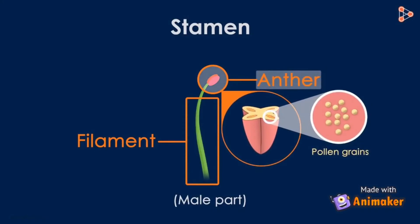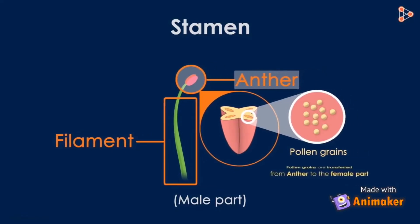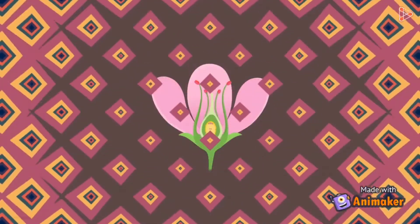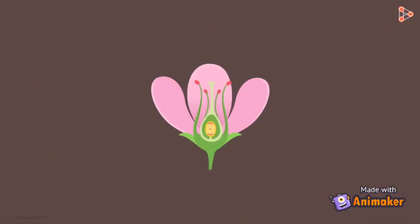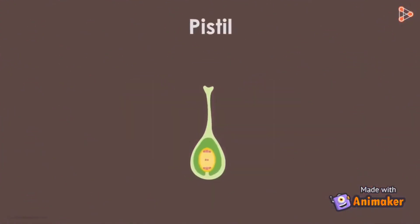There is a specific process by which pollen grains are transferred from the anther to the female part of the same or different flower. We need to focus on our next floral part, the pistil, which is the female part.